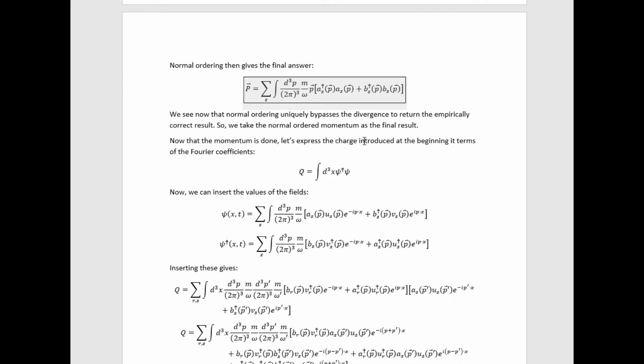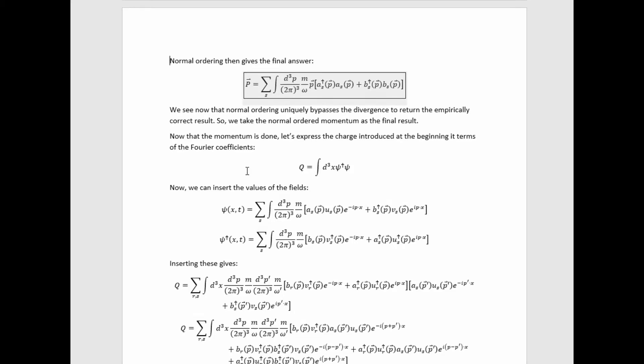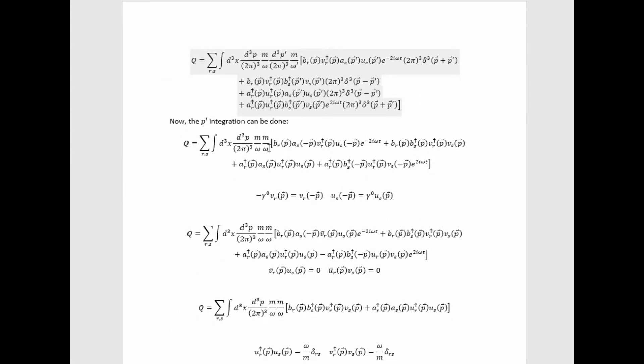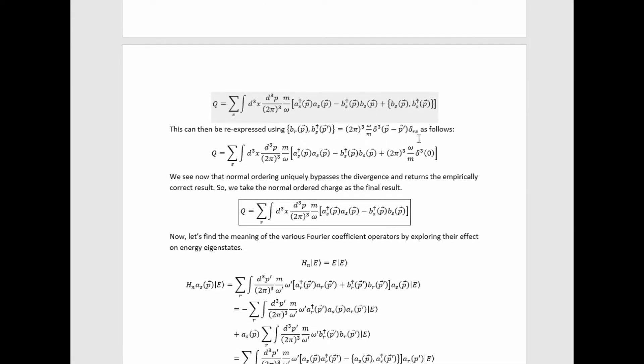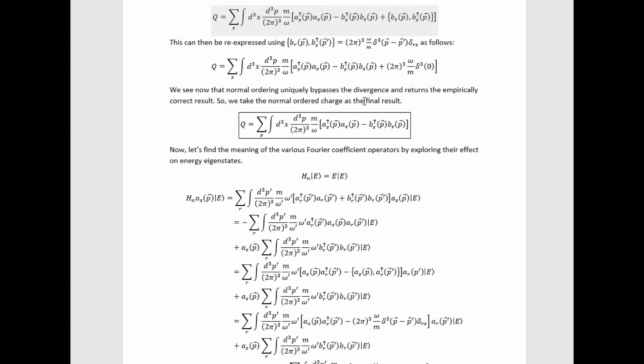For the charge, plugging in the field values, multiplying out, doing the x-integration with the same integral relations, performing the p-prime integration, rewriting with identities, and applying formulas to vanish two terms simplifies the expression. Using a further formula and doing the r-sum, rewriting in terms of the anticommutator and the reordered term, and substituting the anticommutator value, we see that normal ordering uniquely bypasses the divergence and returns the empirically correct result. The normal-ordered charge is taken as the final result.